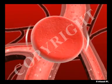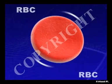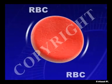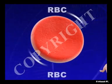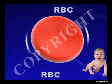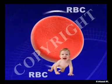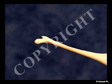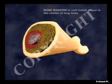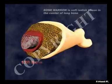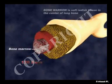As red blood cells are relevant to our subject, let us learn more about them. Right from our birth, red blood cells are continuously produced and destroyed in the bone marrow, which is a soft reddish tissue in the center of the long bones. They have a lifespan of 120 days.